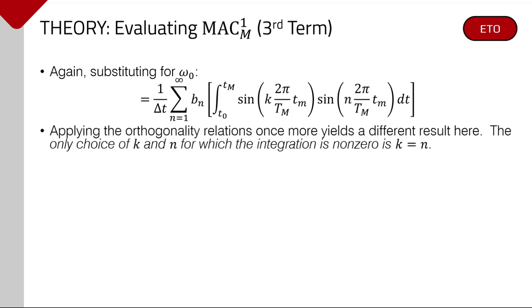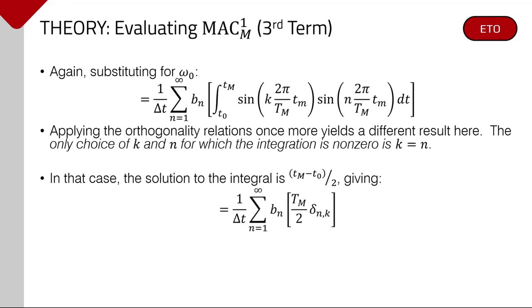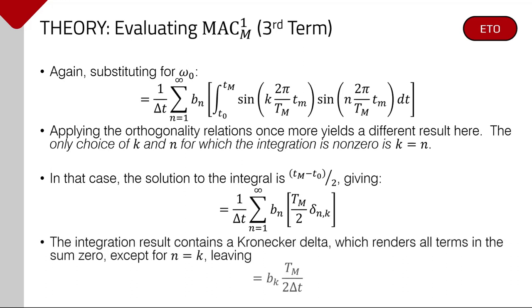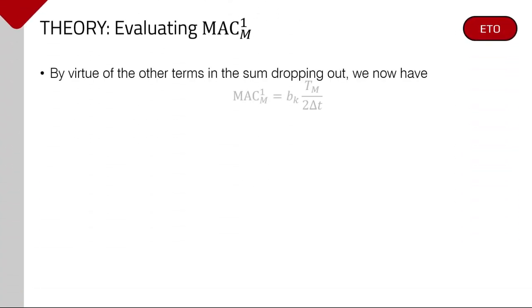Turning to the third and final term. The analysis here will follow the same steps shown prior. The summations are exchanged and the constant terms rearranged. Then the inner summation is recast as an integral. After substituting for omega naught, the contrast with the second term should be apparent. Instead of a sine and a cosine, here the integrand is instead a product of two similar sine functions. When we apply the orthogonality relations, we find a slightly different result. For nearly all choices of integers k and n, the integration is still zero, with the notable exception of the case when k and n take the same value. For that particular case, it can be shown that the solution to the integral is just half the sampling interval. The expression can be simplified further, as the delta function renders all terms in the summation over n zero except one, where n equals k.